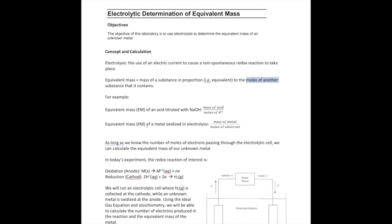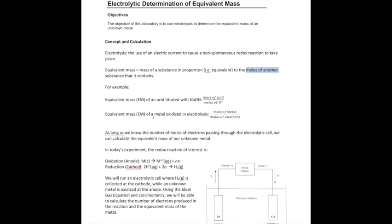If you want to do the equivalent mass of the metal using electrolysis or redox reaction, you take the mass of the metal divided by the moles of the electrons, because the metal contains electrons in them. That's what we're trying to calculate. Typically we do this kind of equivalent mass calculation when we don't really know the exact identity of the acid or the metal.